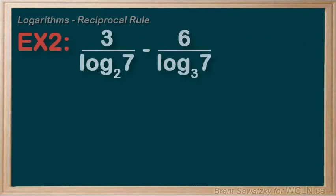Example 2. Combine these into a single log. And we think about the reciprocal rule. Normally with the reciprocal rule we push the log to the denominator and write 1 over it if we need. But in this case the logs are already in the denominator.